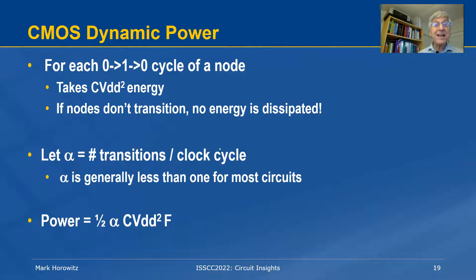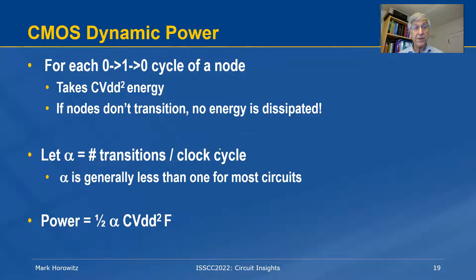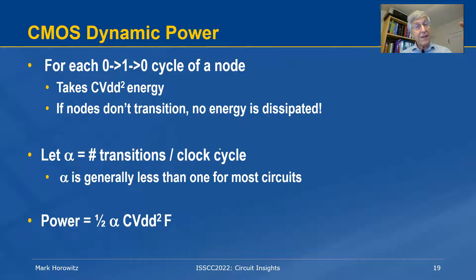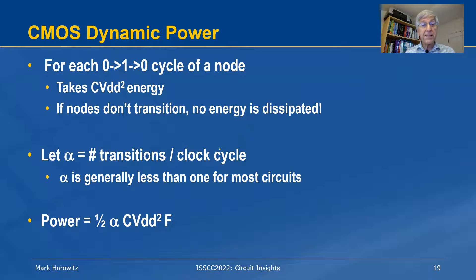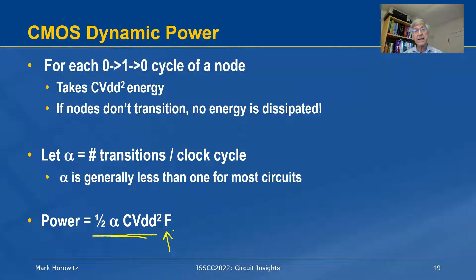For each 0-1-0 transition, it takes an energy of C·V_DD². If the node doesn't transition, it doesn't take any energy at all. If we let alpha be the average number of transitions a node does per cycle, we can calculate the total power of the circuit — it's the energy per cycle times the number of cycles per second, which is the clock frequency. This leads to the very commonly stated power formula for CMOS circuits: P = ½·C·V²·F.